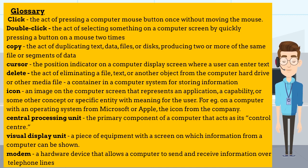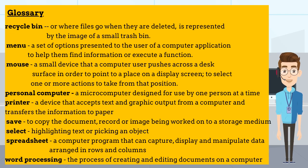Central processing unit — the primary component of a computer that acts as its control center. Visual display unit — a piece of equipment with a screen on which information from a computer can be shown. Modem — a hardware device that allows a computer to send and receive information over telephone lines. Recycle bin — where files go when they are deleted, represented by the image of a small trash bin.